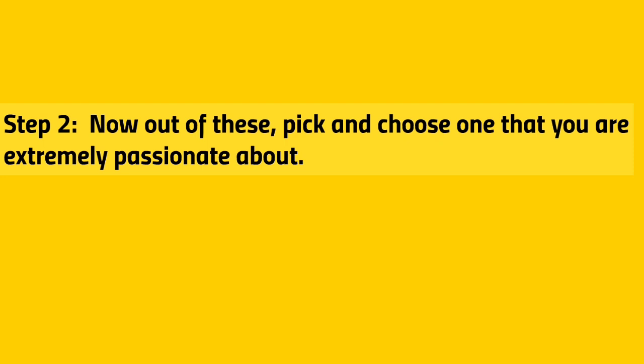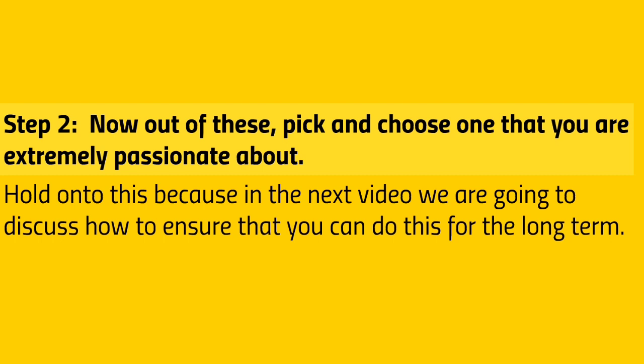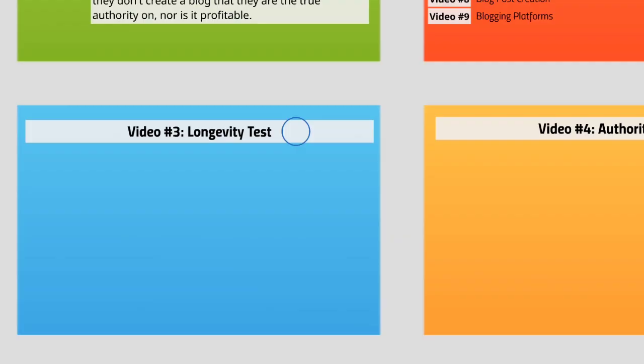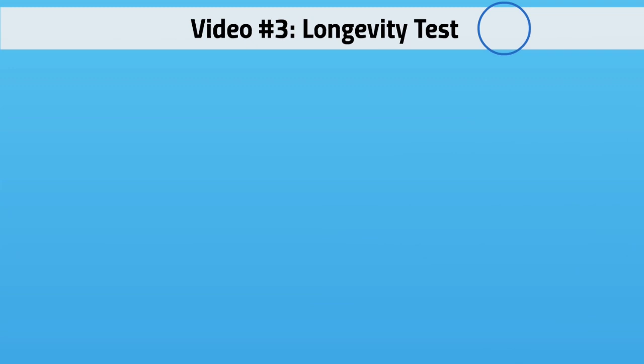After you've done that, step two is to pick and choose the ones you are extremely passionate about from your list. Hold on to those, because in the next video we'll discuss how to ensure you can do this for the long term — the longevity test.